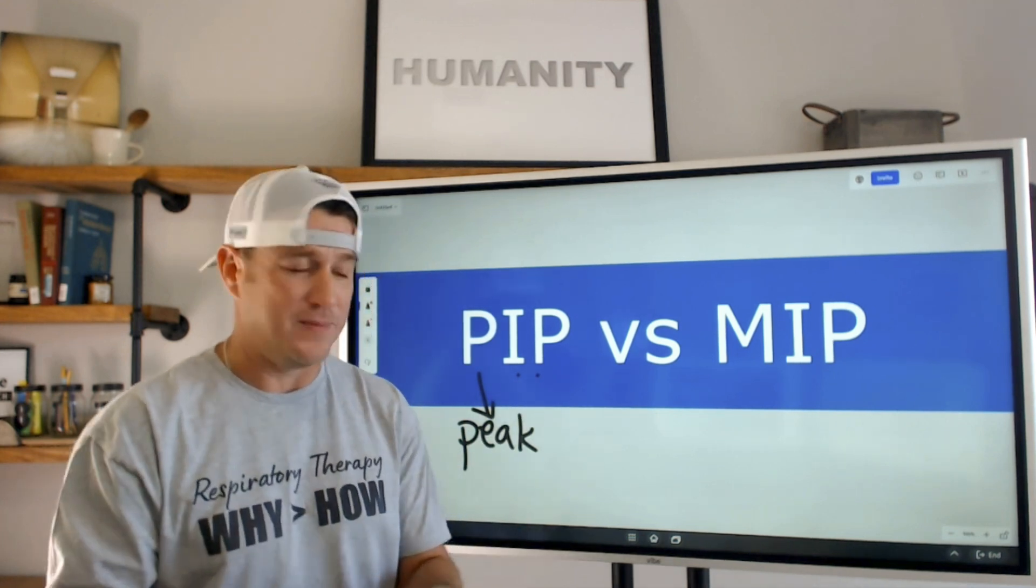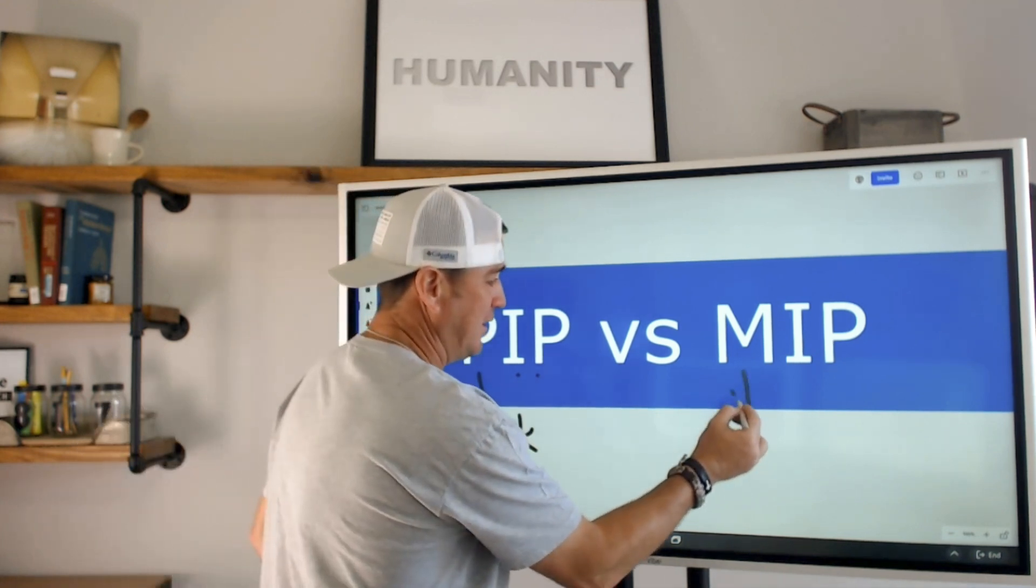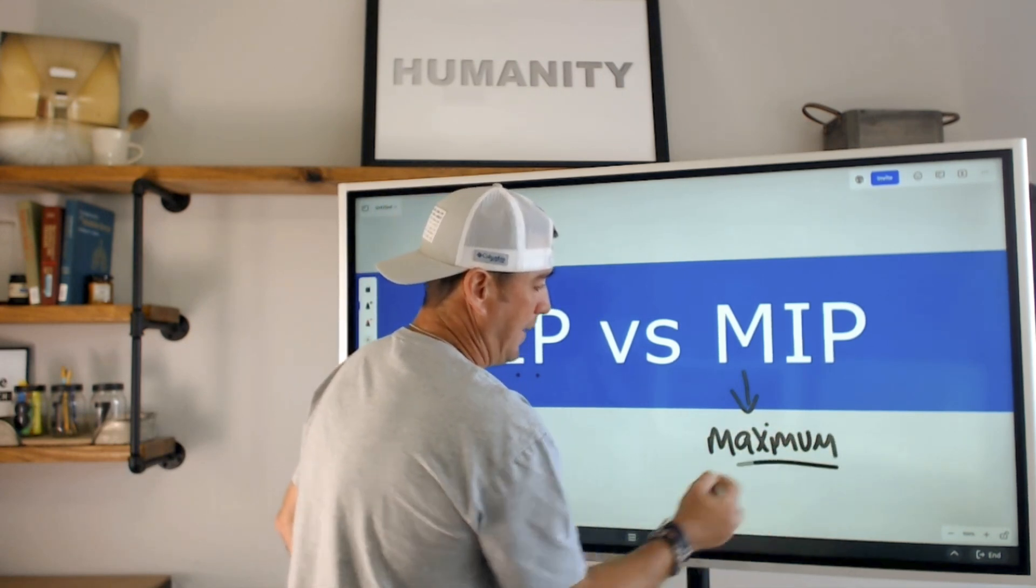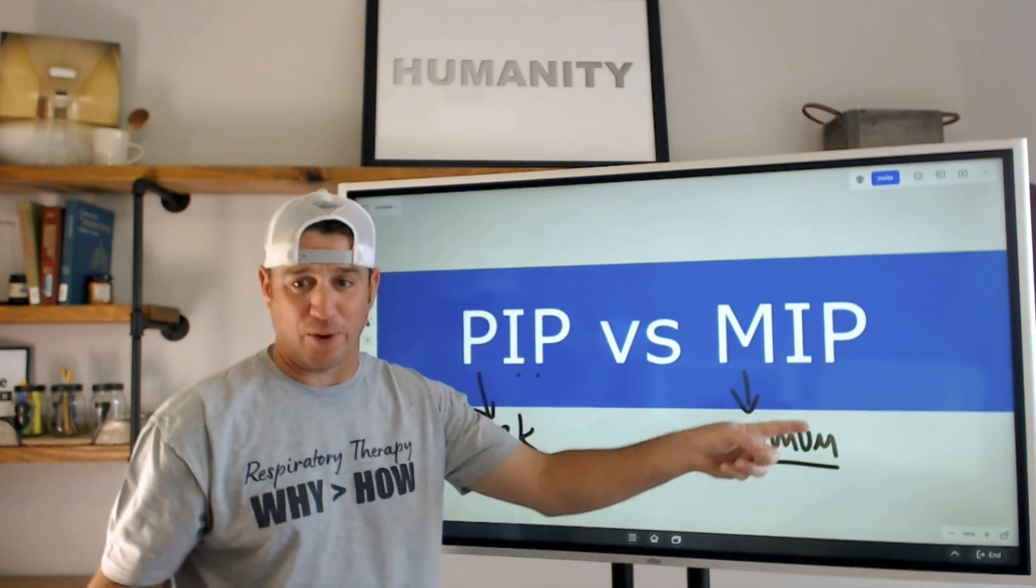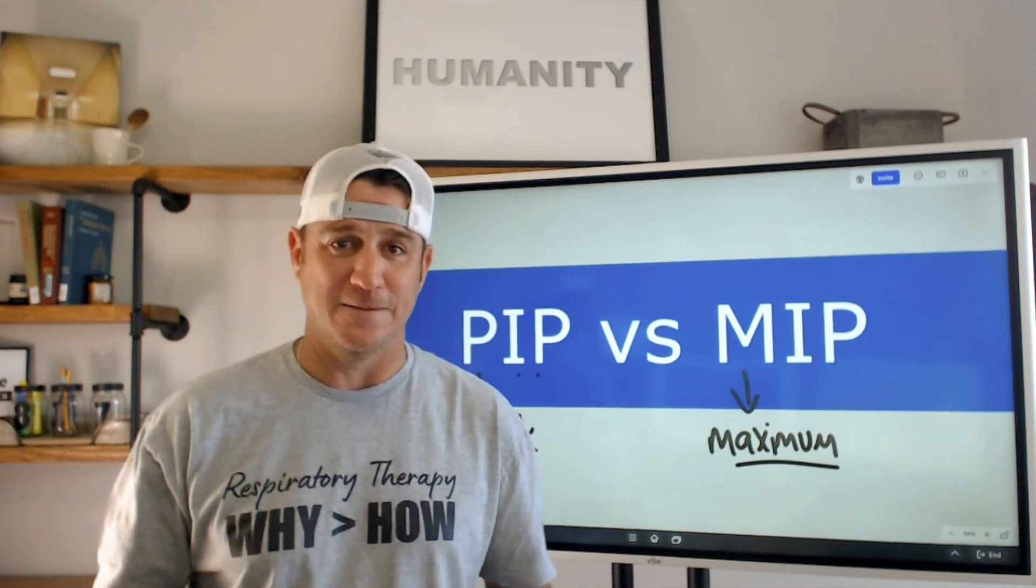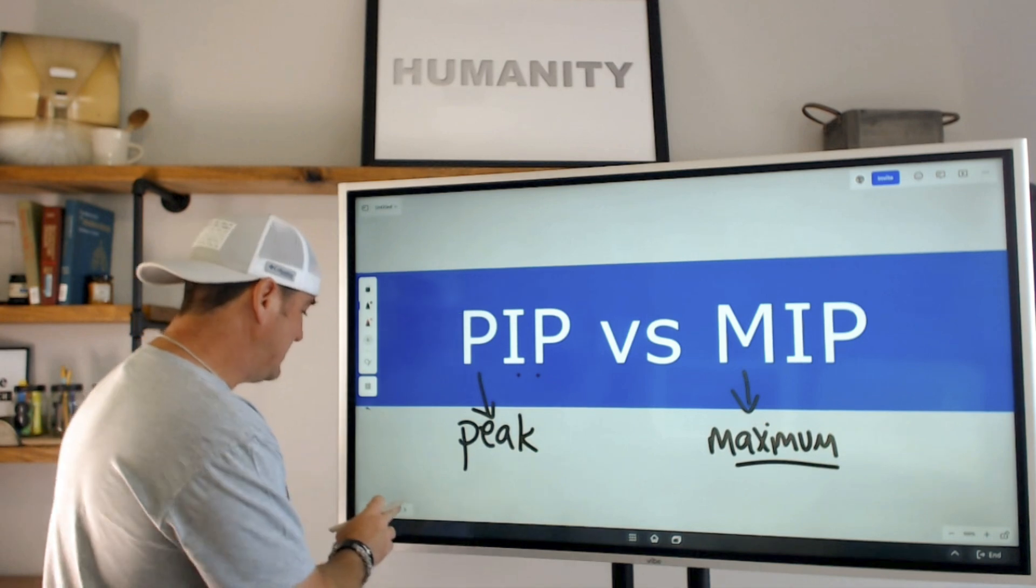That's what it stands for. Now, when we say MIP, we're talking about maximum inspiratory pressure. Now, I know what you're thinking right now. That sounds the same. They're nowhere near being the same thing. So what's the difference? Well, here we go.